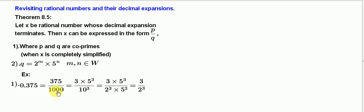Again, 3 × 5³ divided by 10³ equals 3 × 5³ divided by 2³ × 5³. 5³ and 5³ get cancelled, then we have 3/2³.